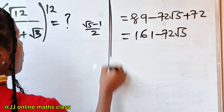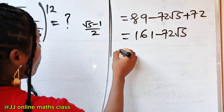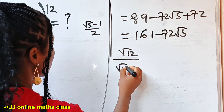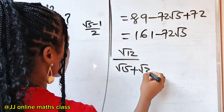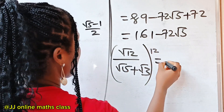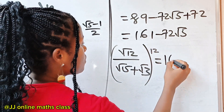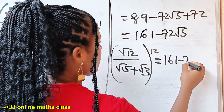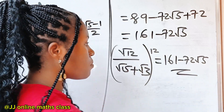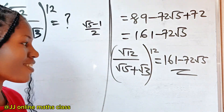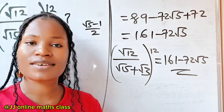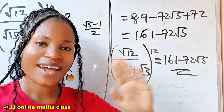Therefore, root 12 divided by (root 15 plus root 3), raised to the power of 12, can be expressed as 161 minus 72 root 5 in its simplest form without the use of a calculator. Thanks so much for watching — see you in my next video!